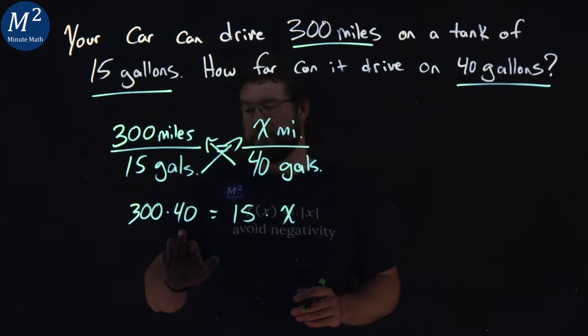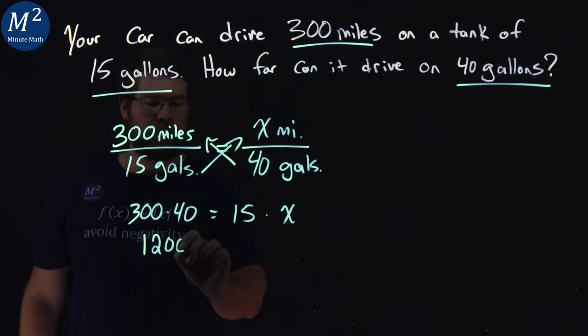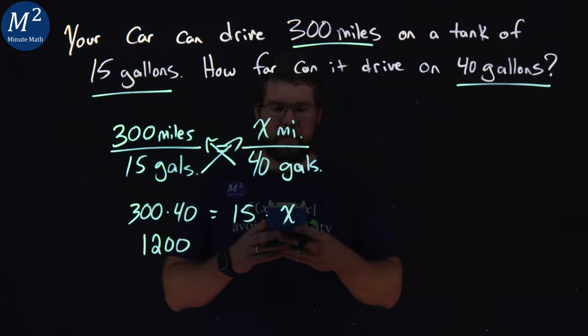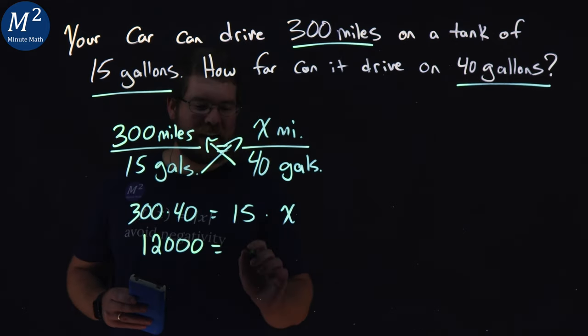Now 300 times 40, that's going to be 1,200, I believe. Let me just double check. Oh, extra zero. Made a mistake. It's 12,000. Good thing I checked it.